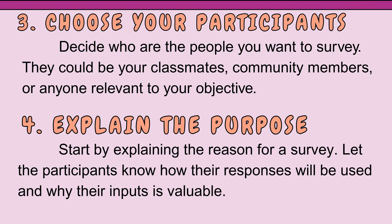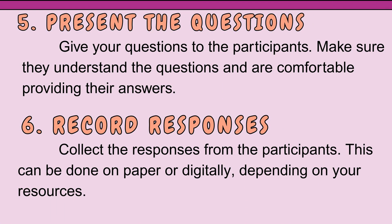Step 3 — Choose your participants: decide who you want to survey; they could be your classmates, community members, or anyone relevant to your objective. Step 4 — Explain the purpose: start by explaining the reason for the survey and let participants know how their responses will be used and why their input is valuable. Step 5 — Present the questions: give your questions to the participants and make sure they understand the questions and are comfortable providing their answers. Step 6 — Record responses: collect the responses on paper or digitally, depending on your resources.